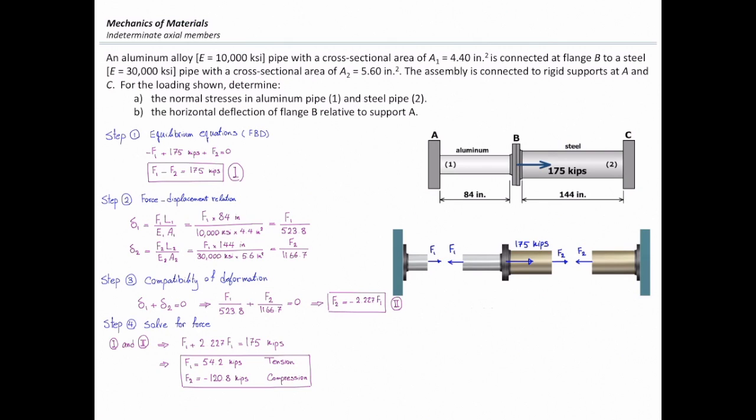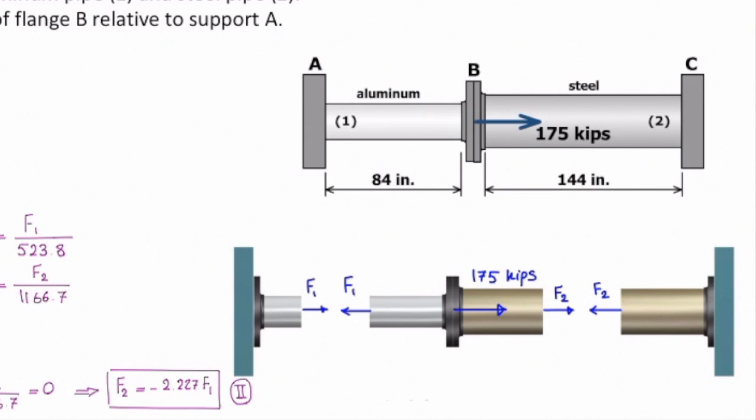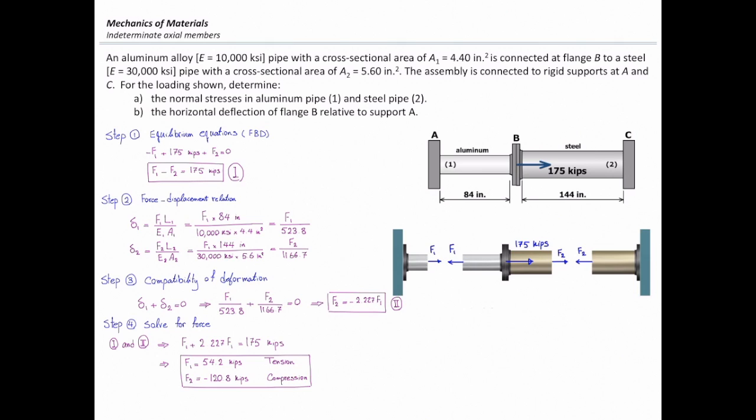There is a way to guess what is the correct answer for this problem. Look at this. The steel element on the right has higher modulus of elasticity and higher cross-section area. If you compare that with the left side, if you compare the options that you had,